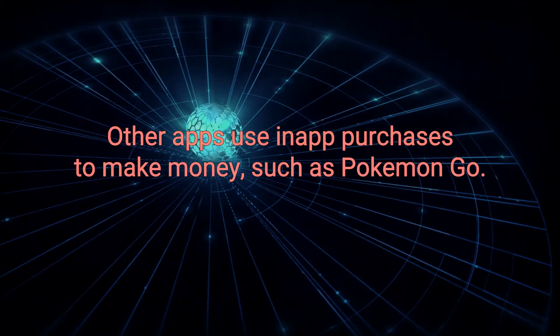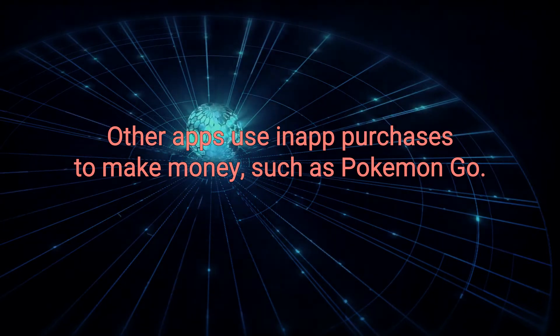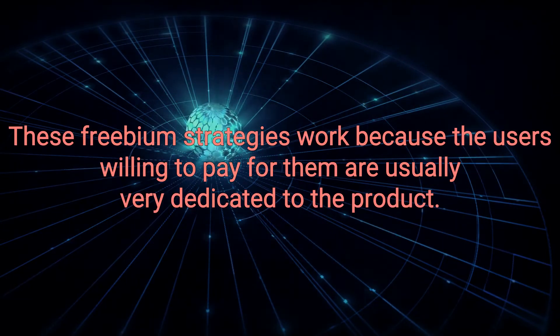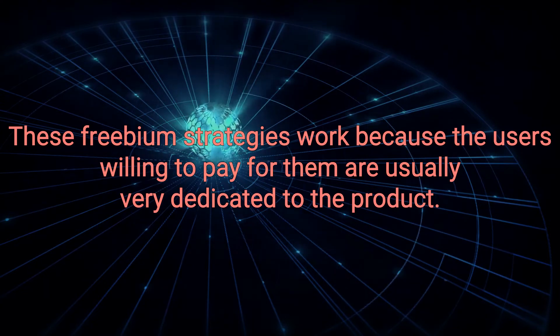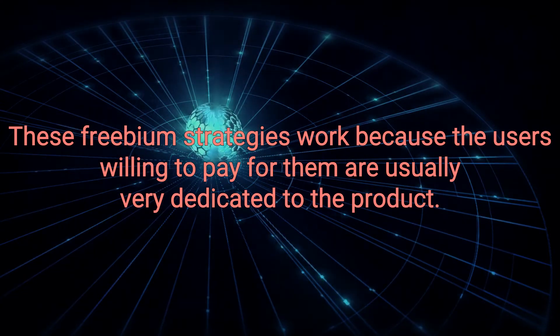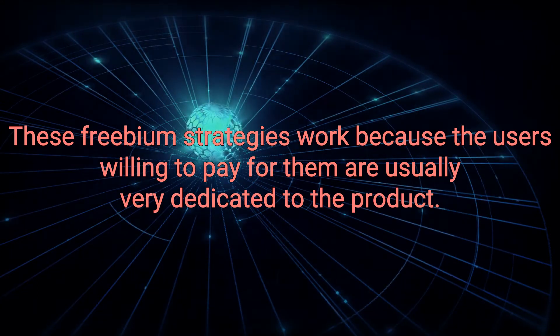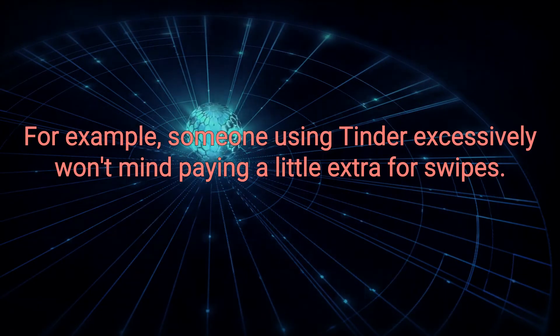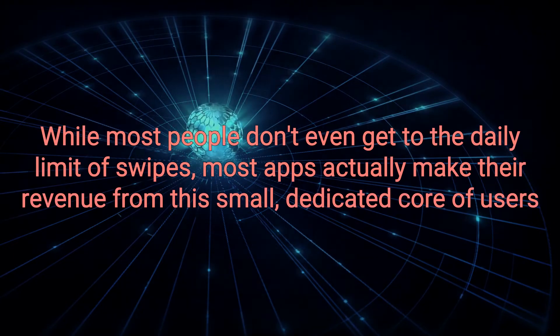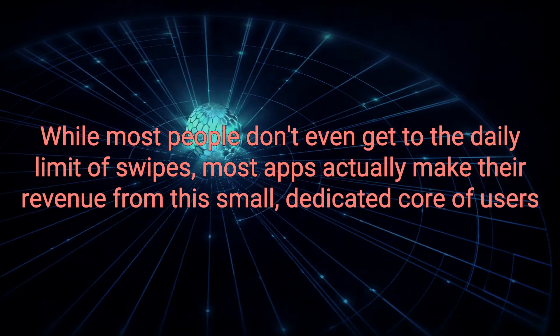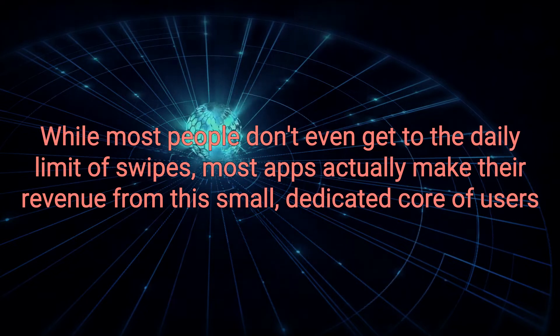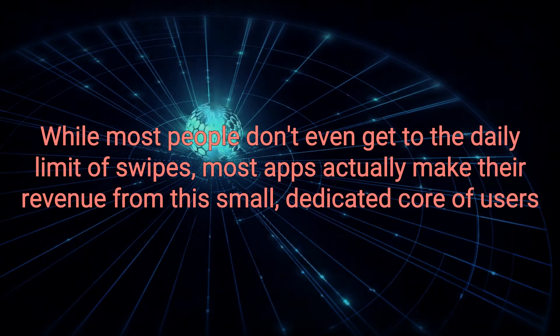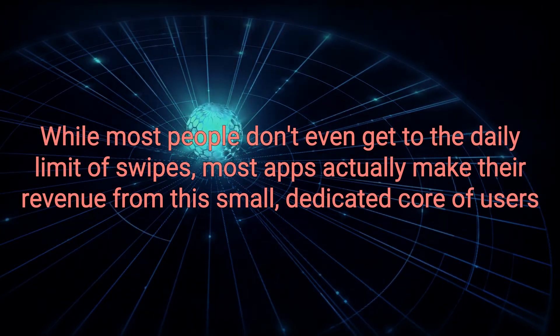Other apps use in-app purchases to make money, such as Pokemon Go. These freemium strategies work because the users willing to pay for them are usually very dedicated to the product. For example, someone using Tinder excessively won't mind paying a little extra for swipes, while most people don't even get to the daily limit of swipes. Most apps actually make their revenue from this small, dedicated core of users.